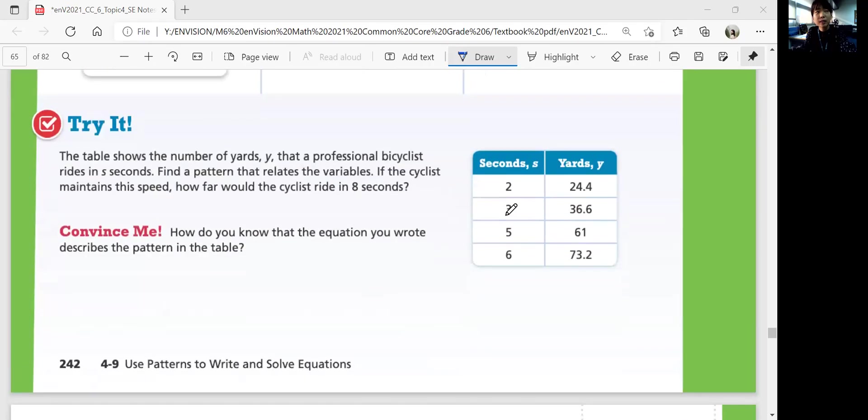Let's look at Try It. The table shows the number of yards Y that a professional bicyclist rides in S seconds. Find the pattern that relates the variables. If the cyclist maintains the speed, how far would the cyclist ride in 8 seconds? So figure out the pattern first, and we'll figure out how many yards the bicyclist rides in 8 seconds.